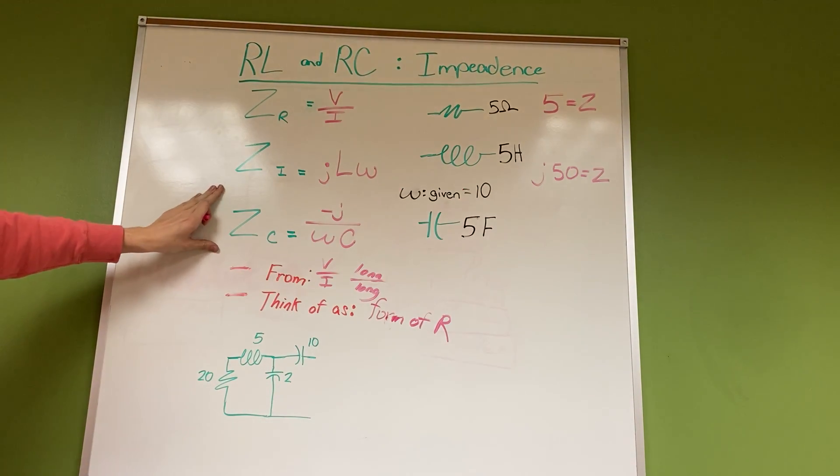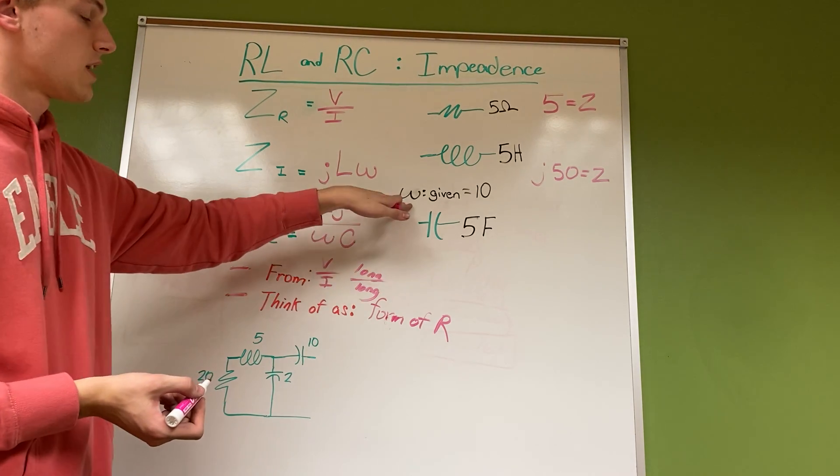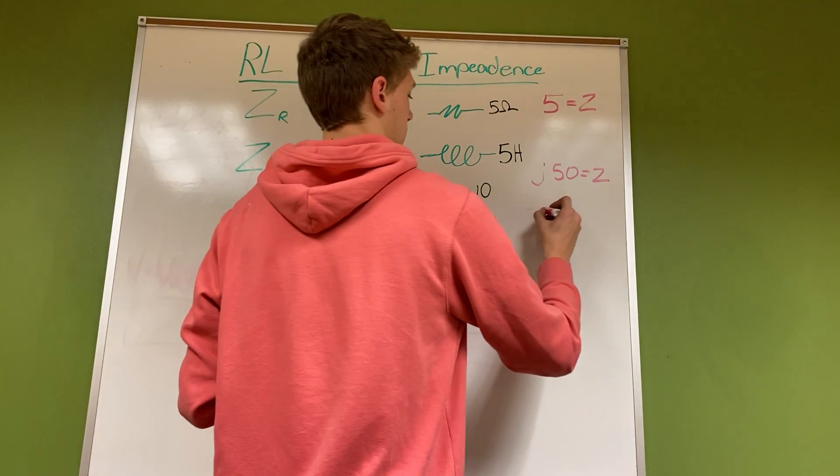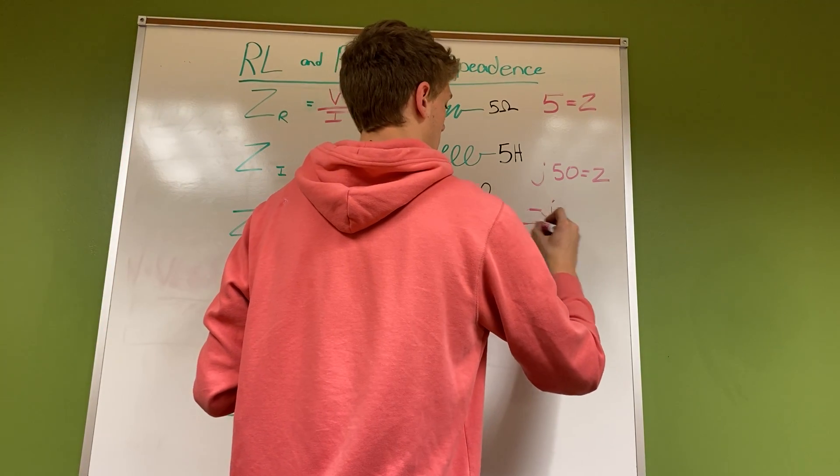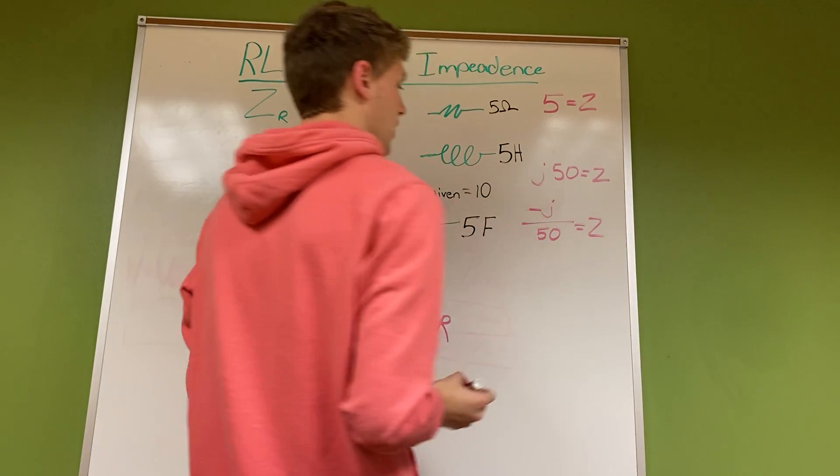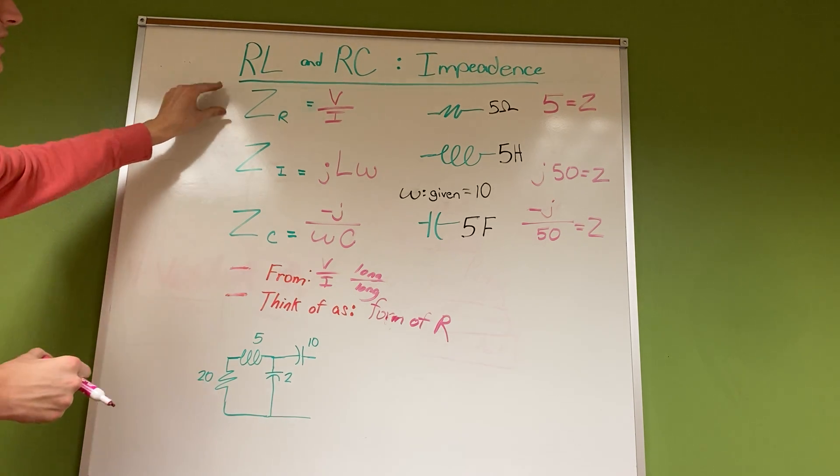Then the same thing for capacitors - think about it as negative j over (omega 10 times 5), or negative j over 50, and that would be the Z for capacitors. That's how you find the impedance for every single one of these - apply these same equations.